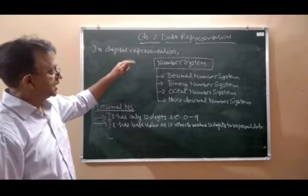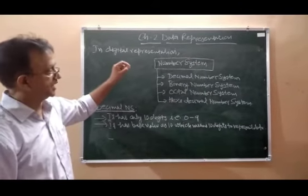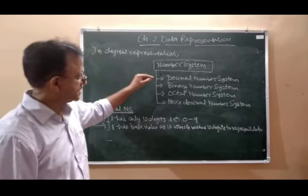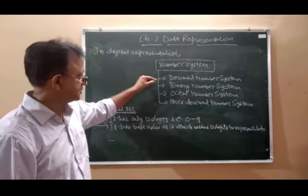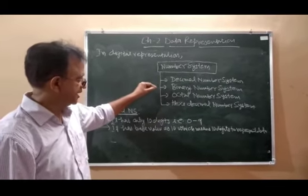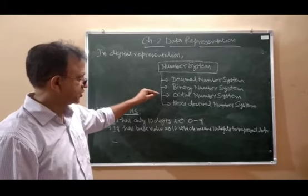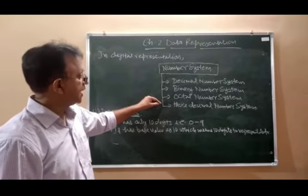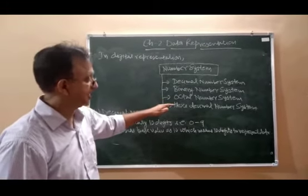In digital representation, numbers are classified into four categories. That is, first is decimal number system, second is binary number system, third is octal number system, and fourth is hexadecimal number system.